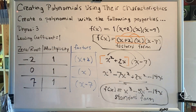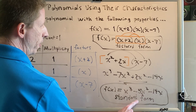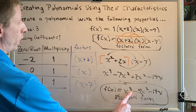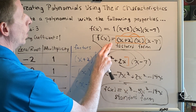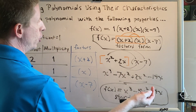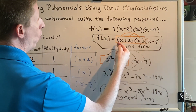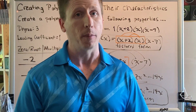One final thing: we want to confirm our polynomial has degree 3. In standard form, we look at the highest exponent of x — that tells us the degree, and indeed it is 3. In factored form, we look at the degree of each factor being multiplied and add them up: 1 plus 1 plus 1 equals 3. This gives us confidence that we solved this problem correctly.